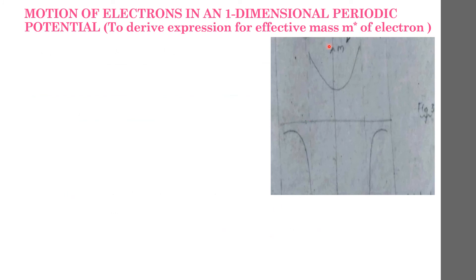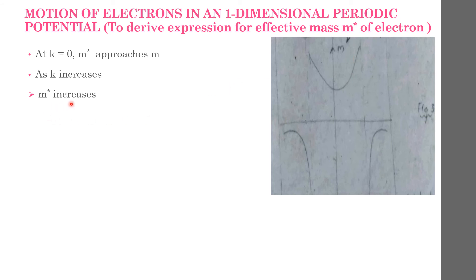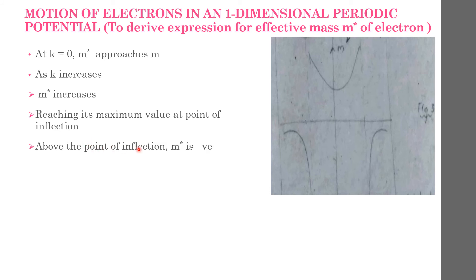This is the graph of m star versus k. At k = 0, m star approaches m. As k increases, m star is increasing, reaching its maximum value at the point of inflection. After the point of inflection, m star becomes negative, and as k tends to π/a, it decreases to a small negative value. At k = k₀, m star has become negative — it was positive, then becomes negative.